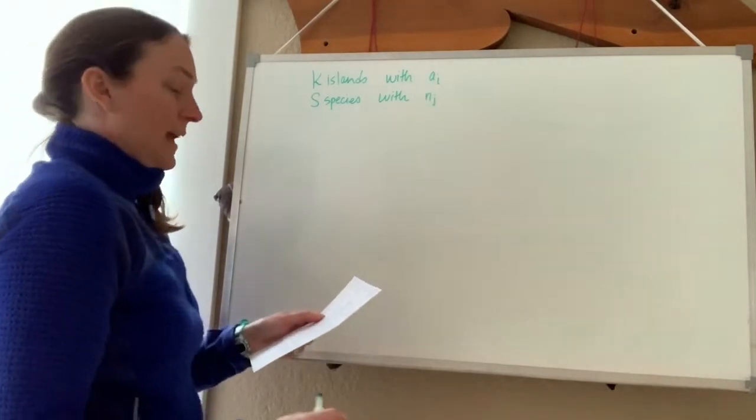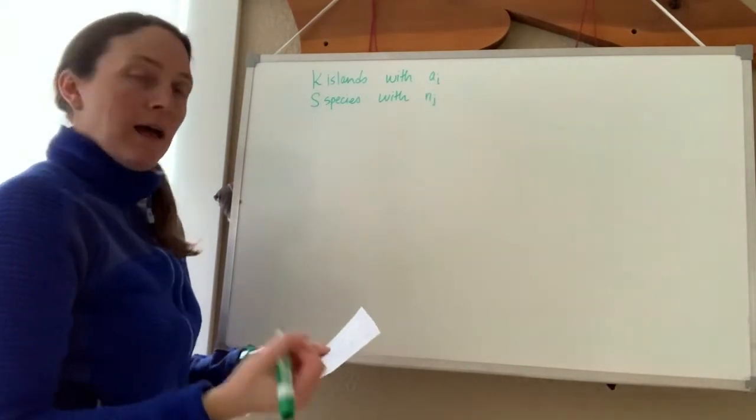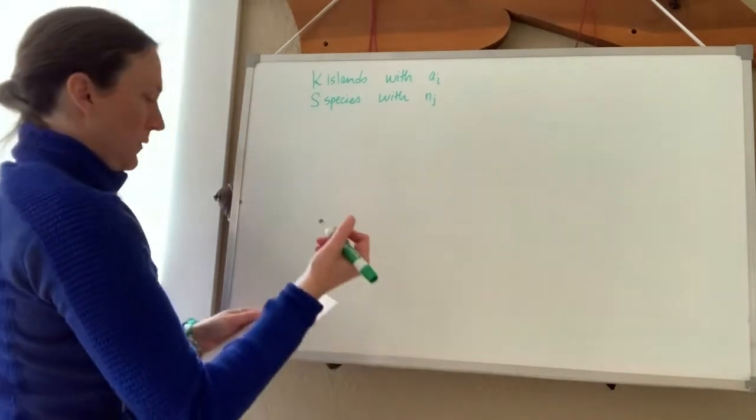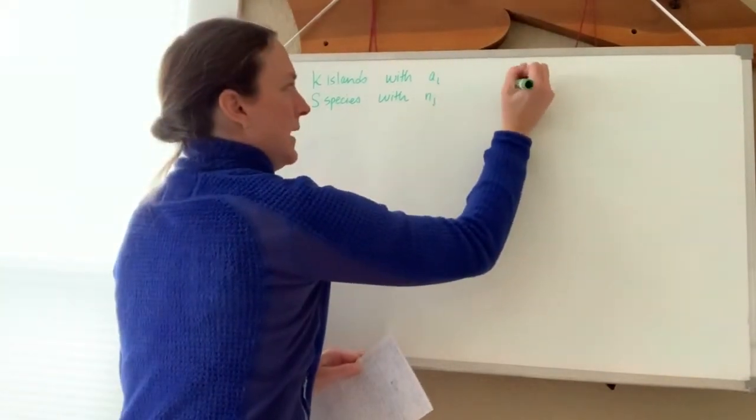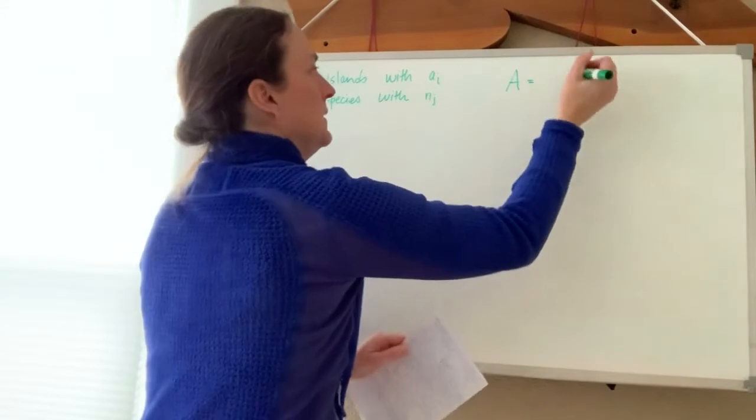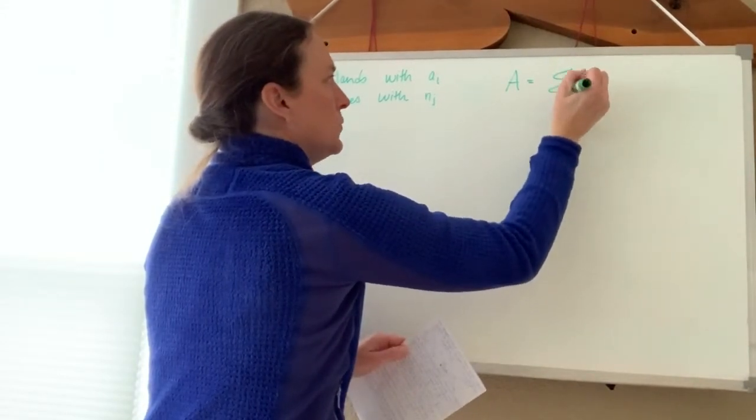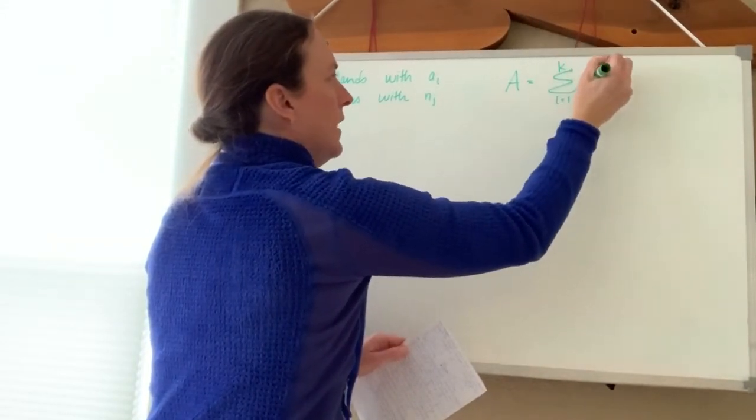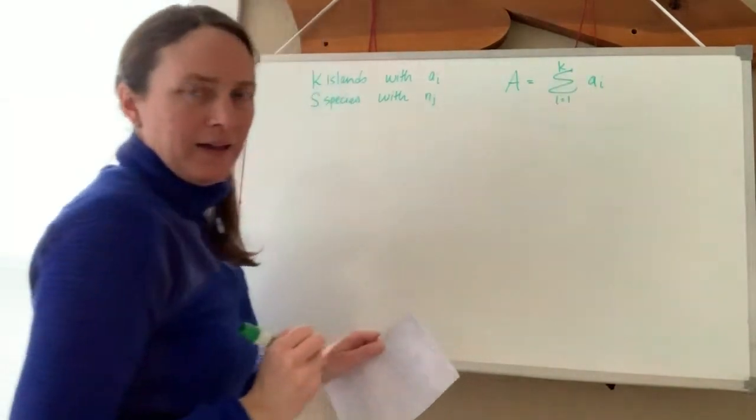Now A would be the sum of all island areas. We would write that as A equals the sum from i equals 1 to k of all a_i's.